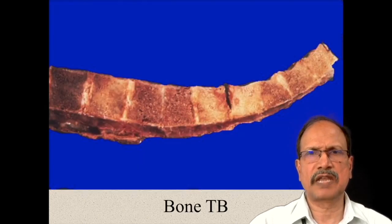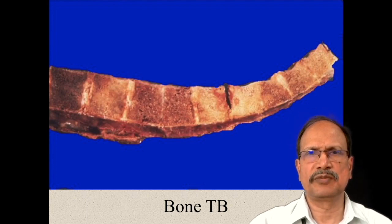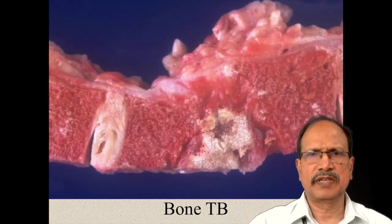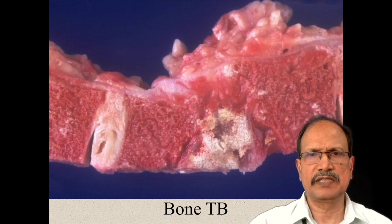This slide shows the involvement of two vertebral bodies in the tuberculosis process with destruction of the intervertebral disc. In a closer view, you can see the necrotic material and compression fracture of the involved vertebra.